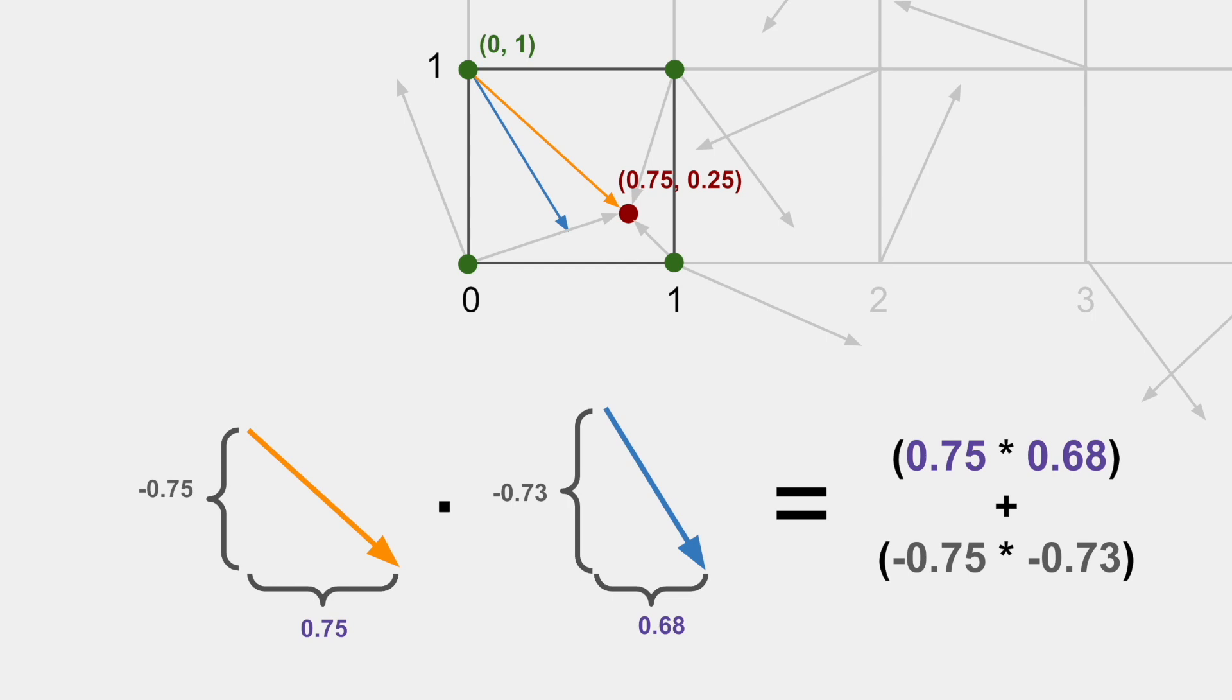The third step is to find the dot products between the distance vectors and the corresponding gradient vectors. Finding the dot product of two vectors is very easy. Just add the product of the x components and the y components. For this corner, this is the corresponding dot product between the gradient vector and distance vector.